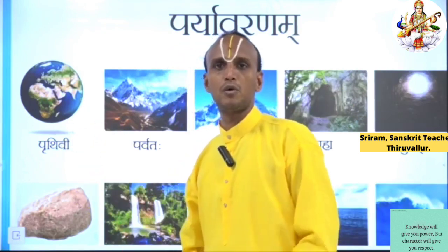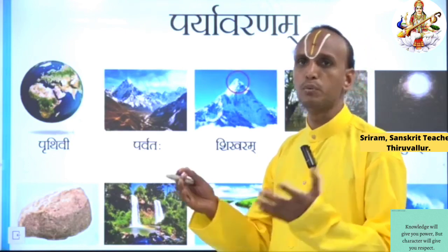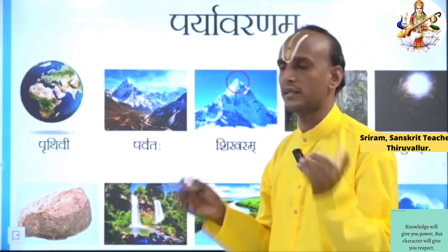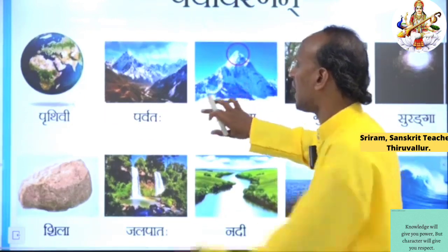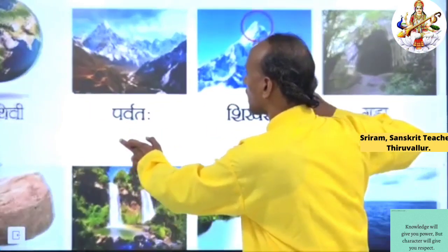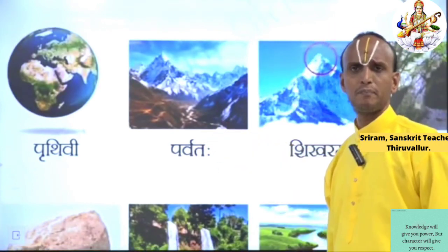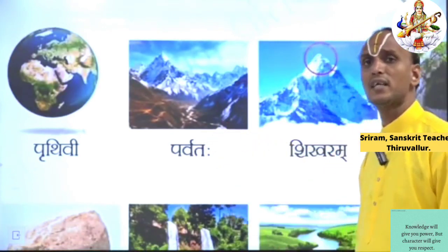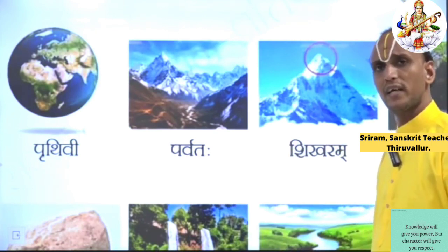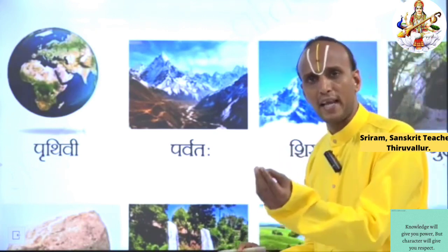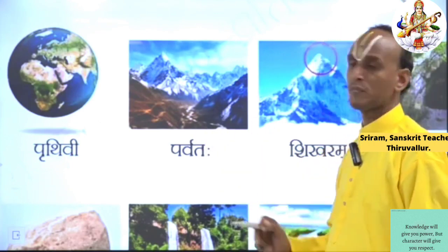In Tamil we say Bhoomi. Prithvi means Earth. Then the second one — Parvataha. What does it mean by Parvataha? We can see the picture, right? Parvataha means Mountain. In Tamil we say Malai.